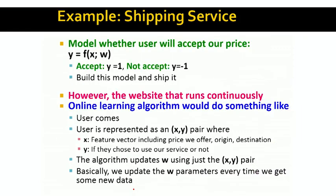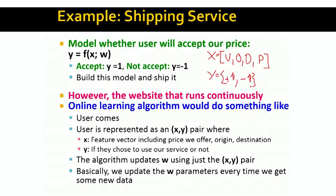To attack this problem we could use lots of historical data, where features include something about the user, something about the origin, something about the destination, and the price we set. Y is plus one if the customer accepted our offer and minus one if they haven't. We find a function F that predicts Y from X — for example, a support vector machine. We train the SVM on some data and then deploy this model on our website or in our store.